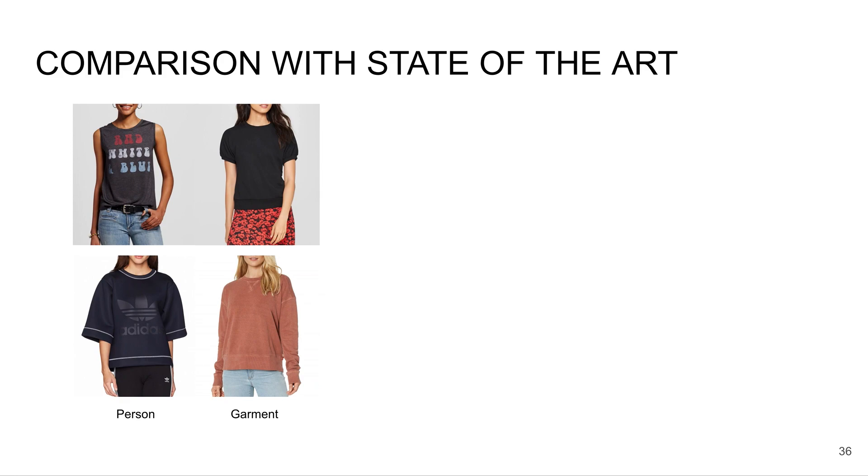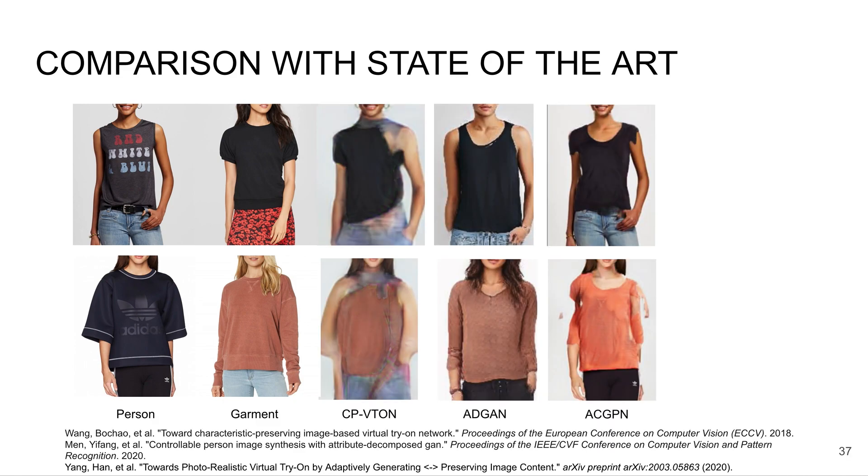I'll now show qualitative comparisons with state-of-the-art methods. I show two examples, one in each row, where we have the person in the first column and the garment in the second column. Here we show results from current state-of-the-art methods. You can see they do a reasonable job. However, there are still many blurring effects and artifacts.